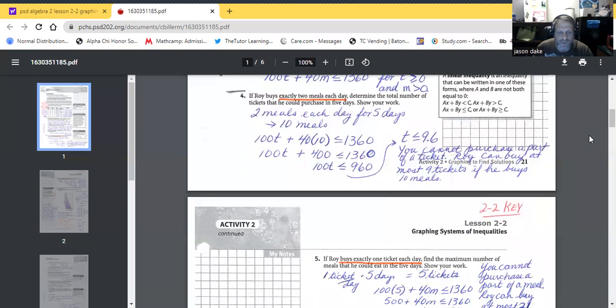Let's look at number four. If Roy buys exactly two meals each day, determine the number of tickets that he could purchase in five days. Show your work. All right guys, so two meals each day times five days, that'll equal 10 meals. So 2 times 5 equals 10. So we're looking at meals right now, this is what we're concentrating on. Yes, they said meals, but ultimately we're looking for tickets. We're looking for tickets.